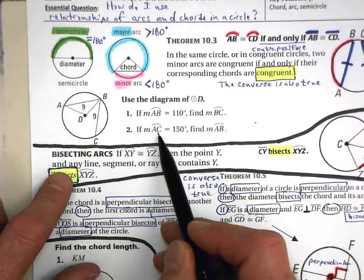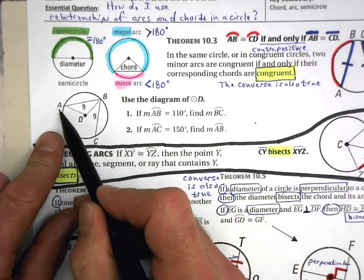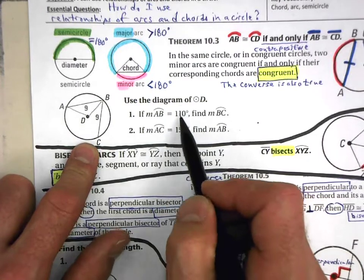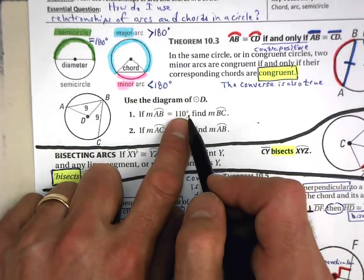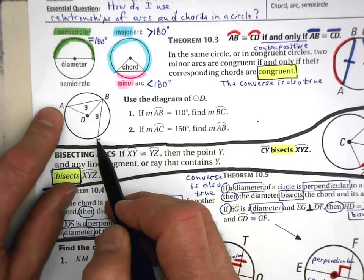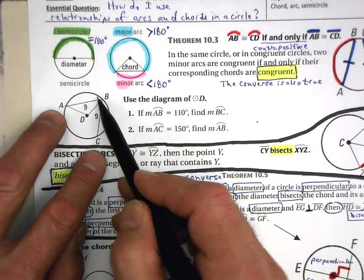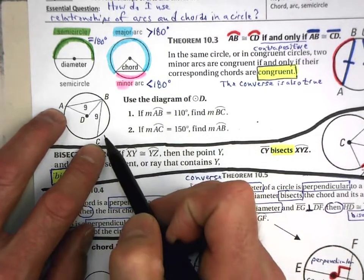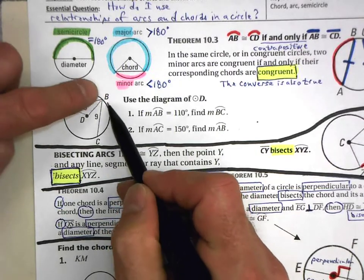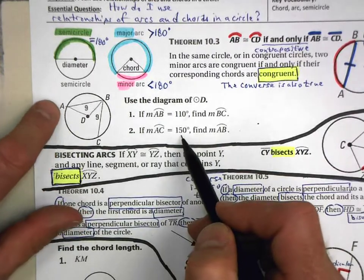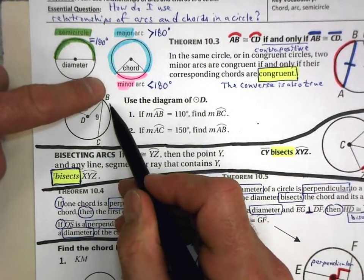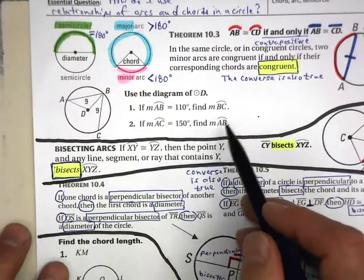Now they're looking at a separate problem: if the measure of arc AC is 150 degrees, then what would be the measure of arc AB? You can't just say it was 110 — this is a totally different situation. Because you know these two cords are congruent, you know these two arcs will also be congruent. So if the remaining part is 150, subtract that from 360, divide by 2, and that gives you the measure of one of these arcs.